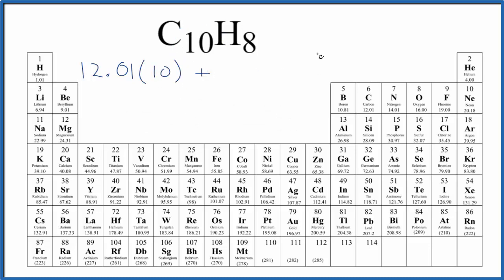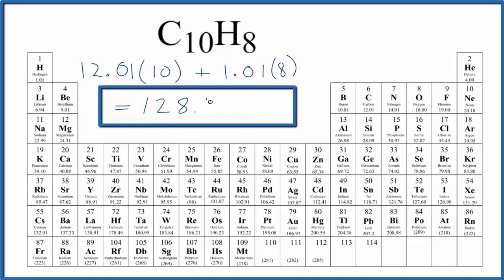We'll add to that hydrogen, which is 1.01 grams per mole, and we have 8 of those. We multiply by 8. So what we'll do is we'll multiply and then add, and that'll give us a molar mass for naphthalene of 128.18.